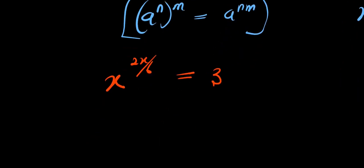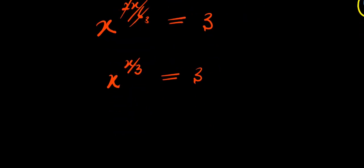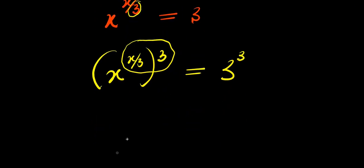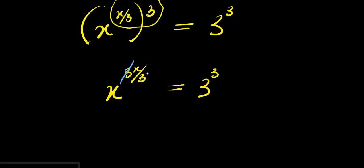Simplifying 2x over 6, we get x to the power of x over 3 equals 3. Now we are solving for x. To eliminate this 3 from the exponent, I will raise each side to the power of 3. So x to the power of x over 3, raised to the power of 3, equals 3 to the power of 3. Multiplying the exponents gives x to the power of 3x over 3, which simplifies to x to the power of x equals 3 to the power of 3.